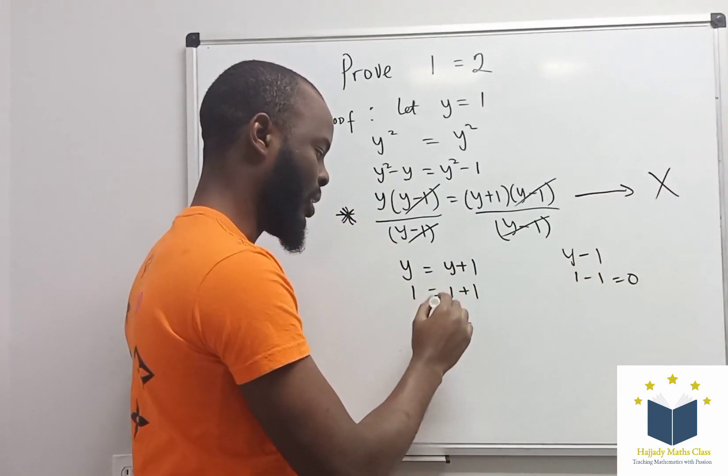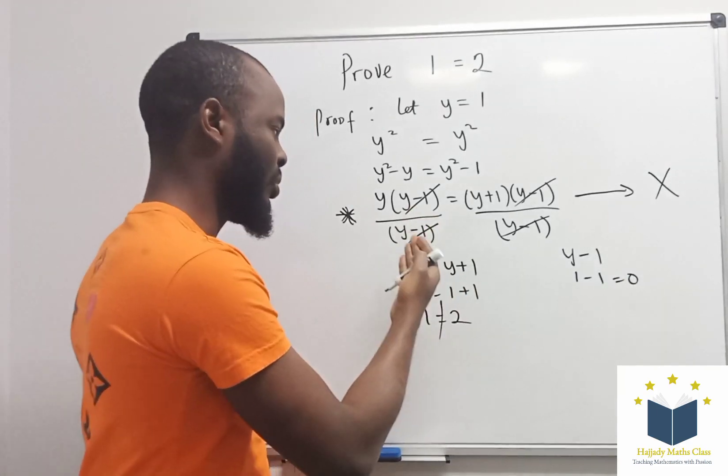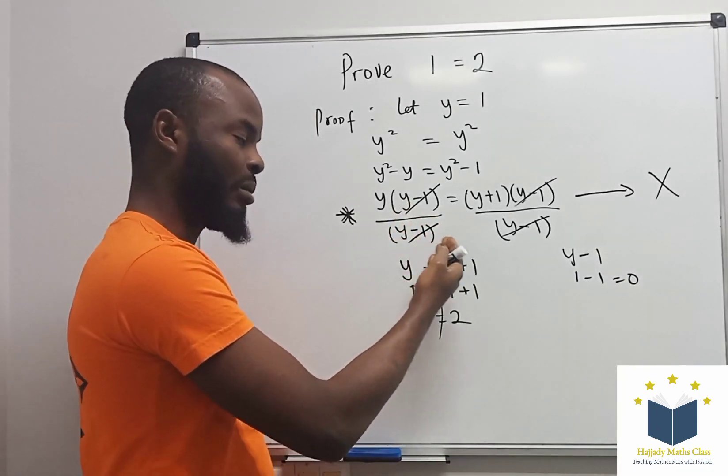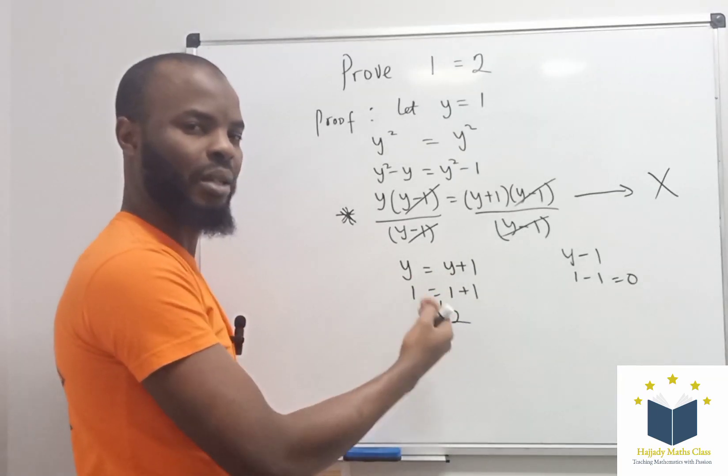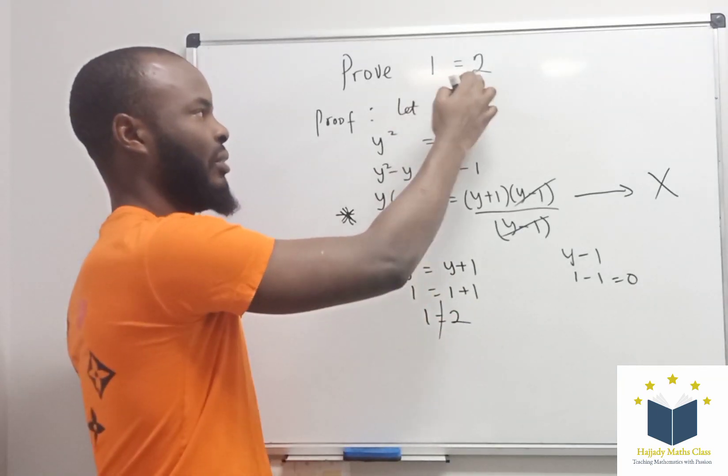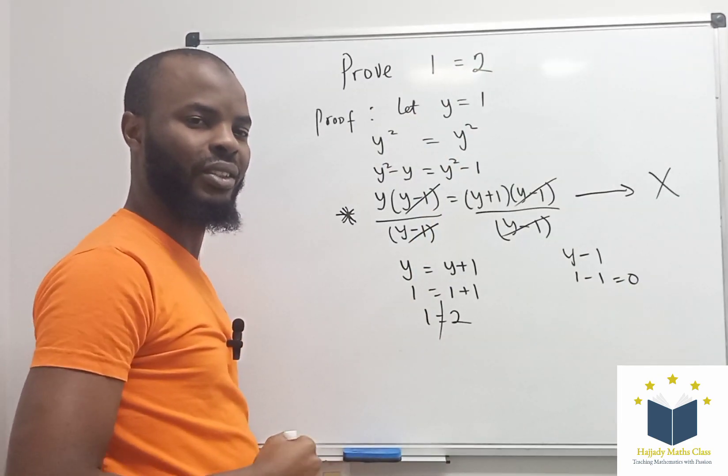Since this step is wrong, 1 can never equal 2. Some mathematicians use this trick, dividing by (y - 1) and continuing to solve, but this step is very wrong. So 1 can never equal 2. Thank you very much for watching, see you next time.